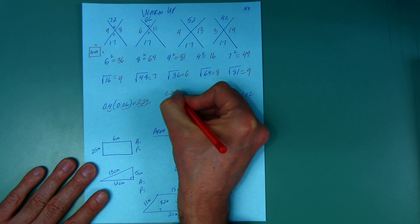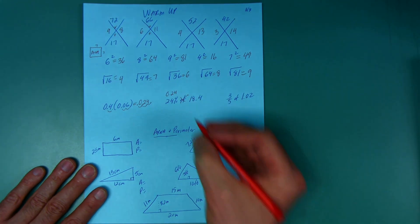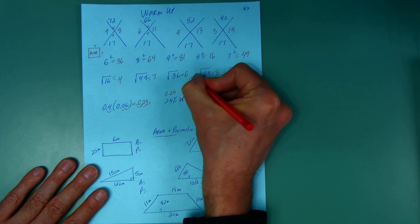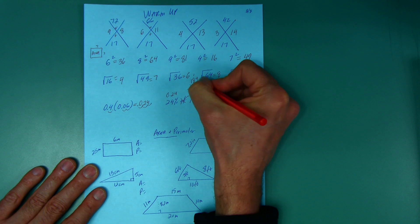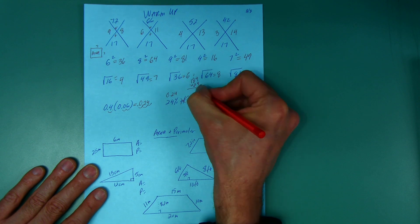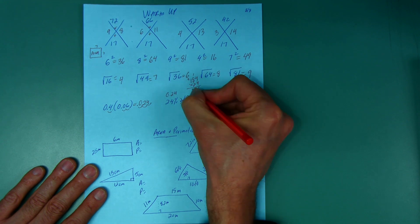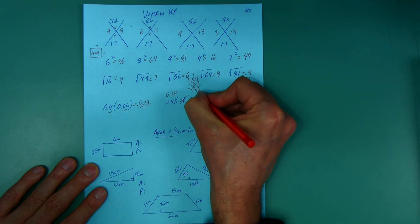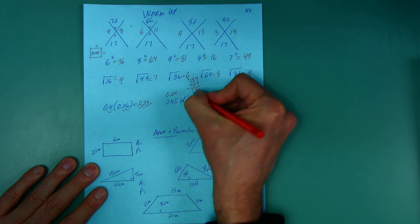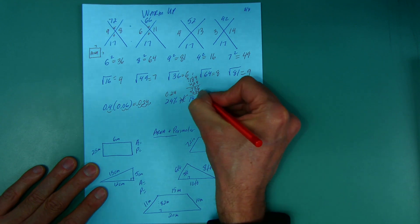So I'm going to multiply 0.24 times 18.4, which is just like 184 times 24. First, right, 4 times 4 is 16, carry the 1. And 4 times 8 is 32 plus 1 is 33. And 4 times 1 is 4 plus 3 is 7. Put a placeholder. Now I go 2 times 4 is 8, 2 times 8 is 16, and 2 times 1 is 2 plus 1.